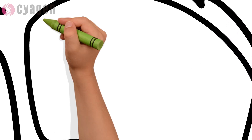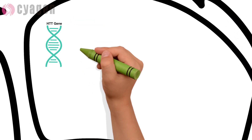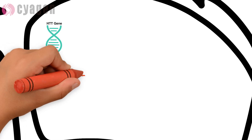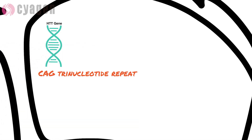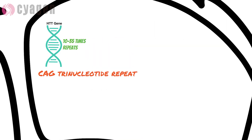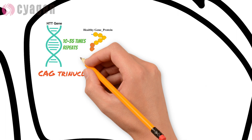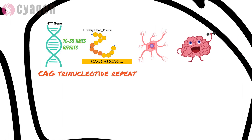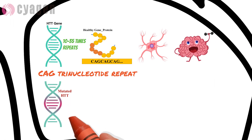The mutation responsible for Huntington's disease is the HTT gene, which contains a CAG trinucleotide repeat. This segment comprises repeating sets of three DNA building blocks. Typically, the CAG sequence repeats between 10 to 35 times within the gene. However, individuals affected by Huntington's disease exhibit more than 36 repetitions, with some having over 120 repetitions.